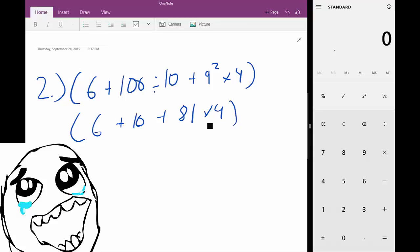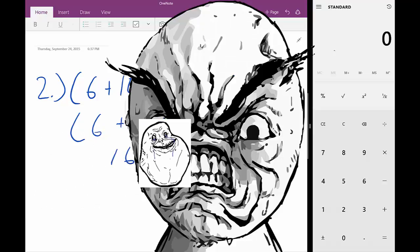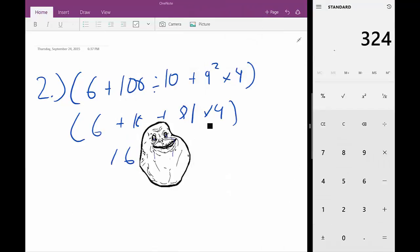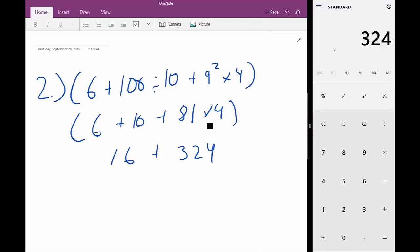Which simplifies that a little bit more is 16 plus, let's see, 81 times 4. Let's do that on the calculator. 81, 4 times 81 equals 324. Oh my, yeah, that's going to look like a nice round number.